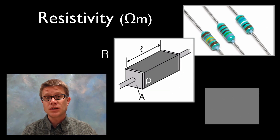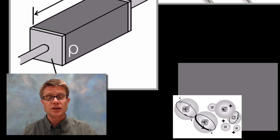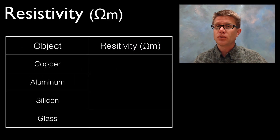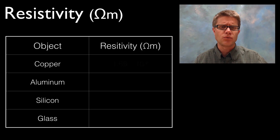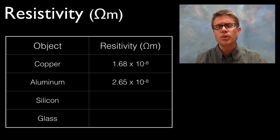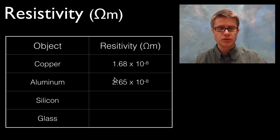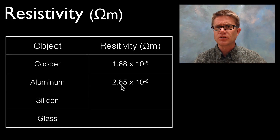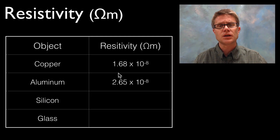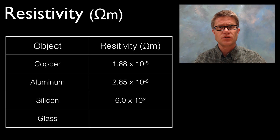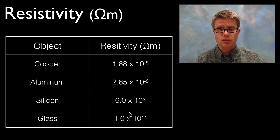Again, it's the material and how the atoms are arranged inside. You can measure resistivity for any material, but you also have to calculate cross-sectional area and length. Looking at a table of different materials, copper and aluminum have really low resistivity — they don't oppose flow of electric charge. Copper is 1.68 times 10 to the negative 8, a really small number, and it's slightly smaller than aluminum, so copper is a better conductor of electricity. Silicon has a value somewhere between that and an insulator like glass, which has a really high resistivity, opposing almost all of that flow.